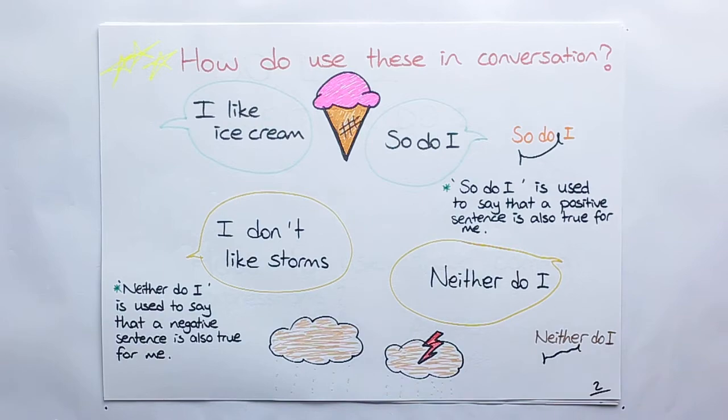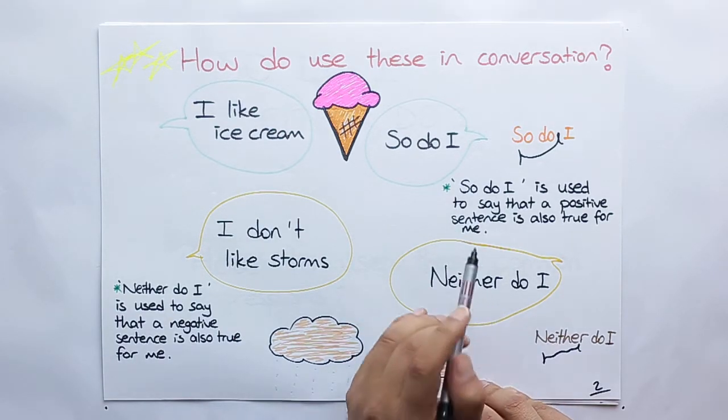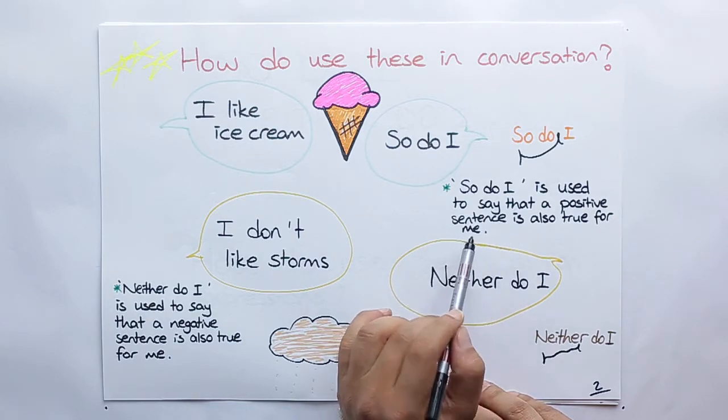Yes, first of all, how do we use these structures in conversations? As an example, I like ice cream, so do I. And here it says that so do I is used to say that a positive sentence is also true for me.